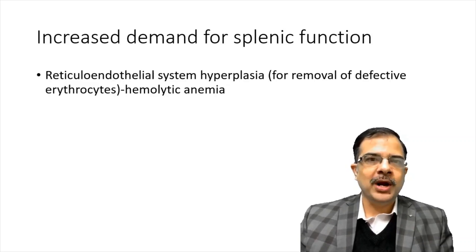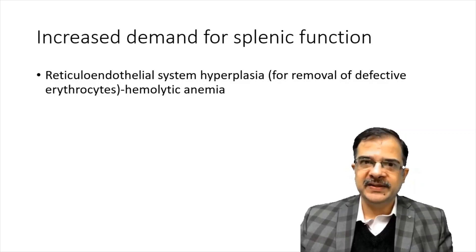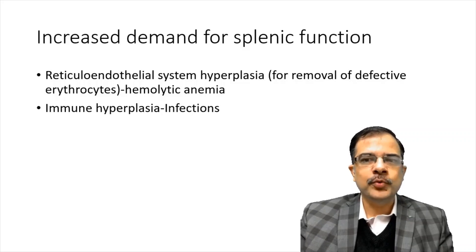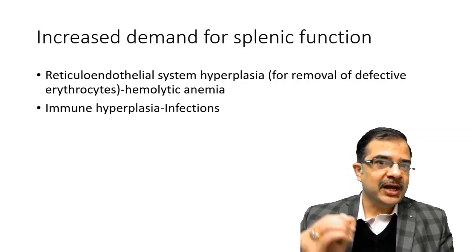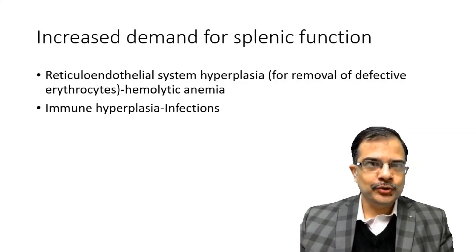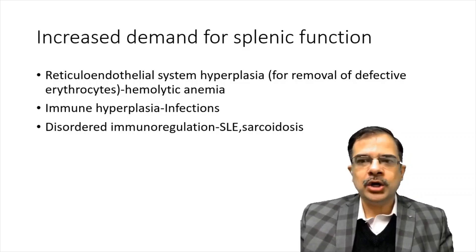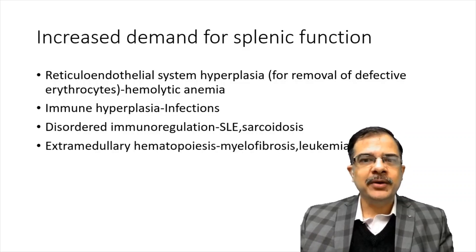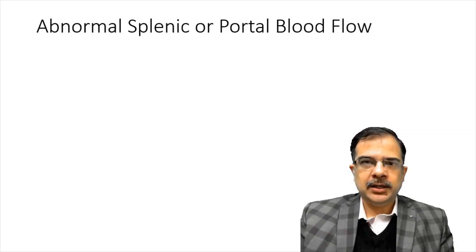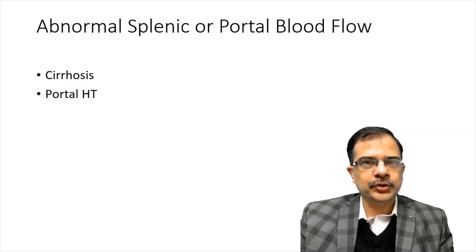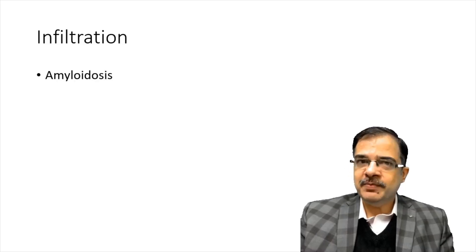Causes of increased demand for splenic functions: reticuloendothelial system hyperplasia for removal of defective RBCs, like in hemolytic anemias; immune hyperplasia in infections — malaria, tuberculosis, infectious mononucleosis, HIV, kala-azar; disordered immunoregulation seen in SLE or sarcoidosis; or extramedullary hematopoiesis seen in myelofibrosis and leukemias. Abnormal portal blood flow includes cirrhosis and portal hypertension. Infiltration causes include amyloid, leukemias, lymphoma, and Gaucher's disease.